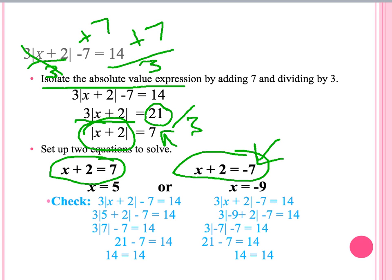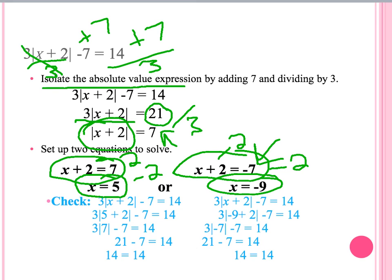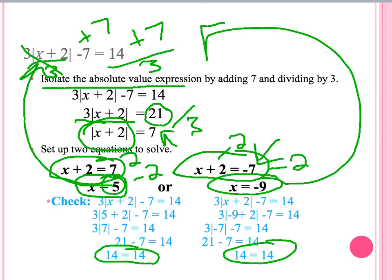To solve, we subtract 2 from both sides in each equation. For the first equation, we get x equals 5. For the second equation, we also subtract 2, giving us x equals negative 9. Now we are not done — our last step is to plug our solutions into the original problem and make sure our answers check out for both solutions. Our final answer is x equals 5 or negative 9, and we can put these in set notation.